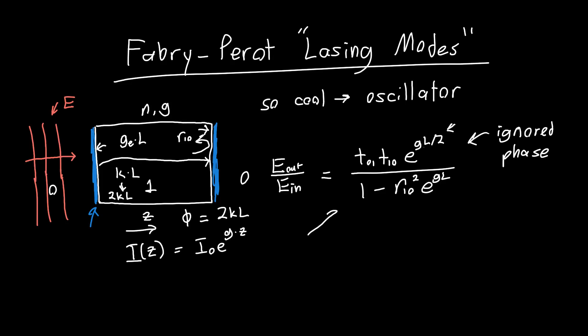On upstairs, it'll look like e to the minus i phi over 2. And downstairs, it'll look like e to the minus i phi.